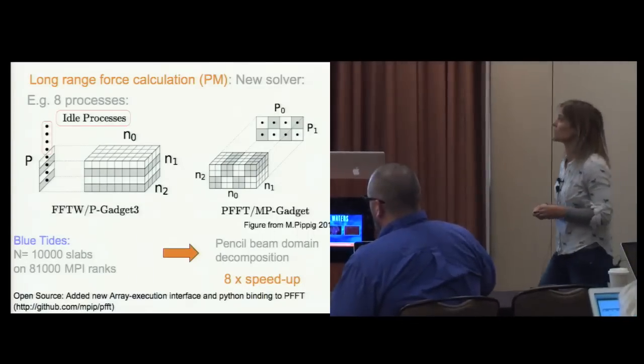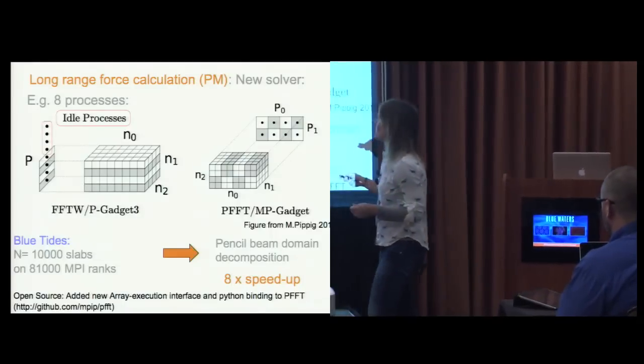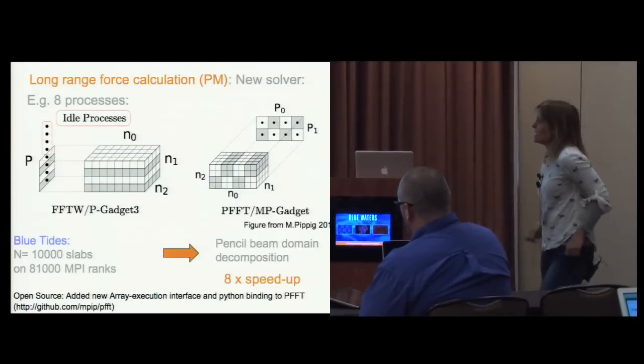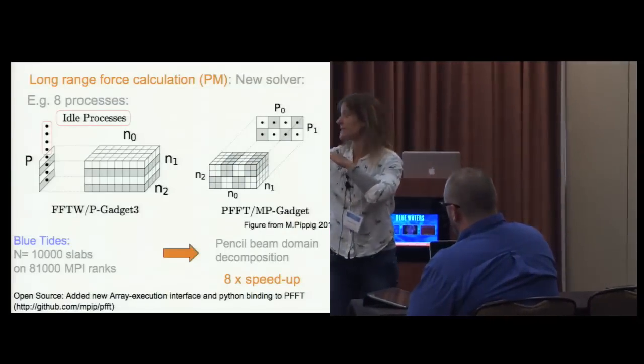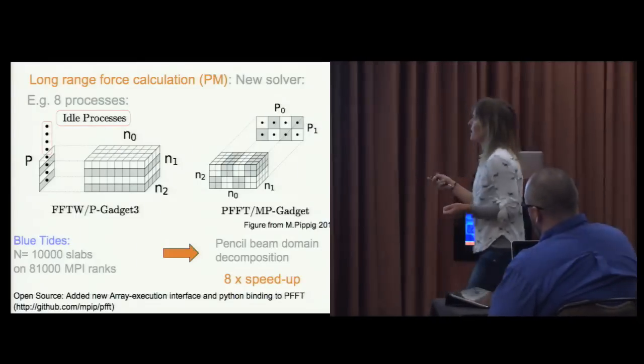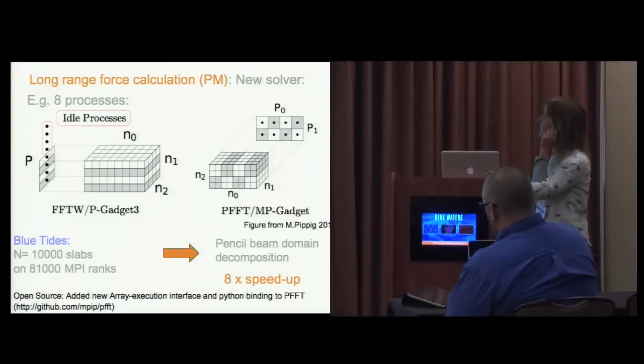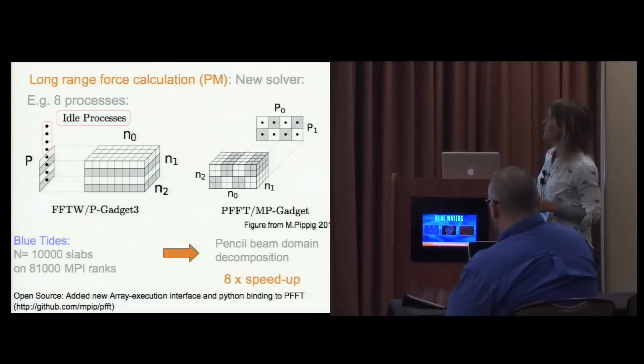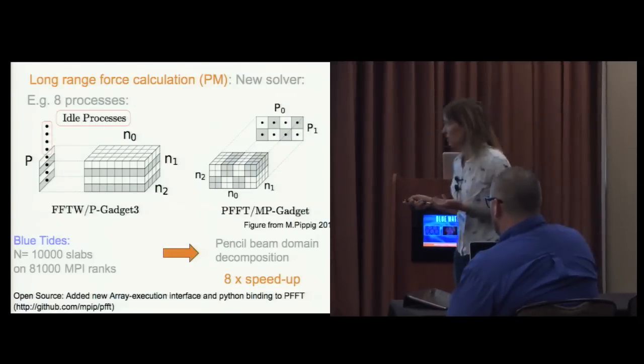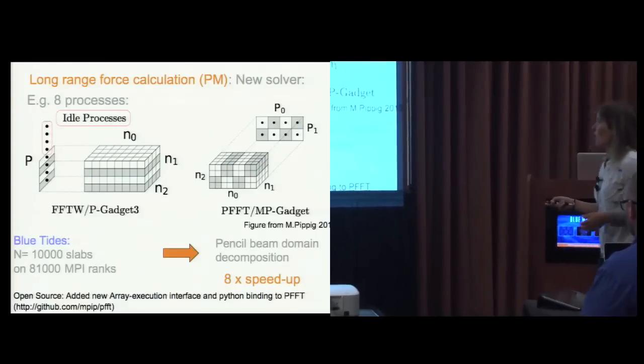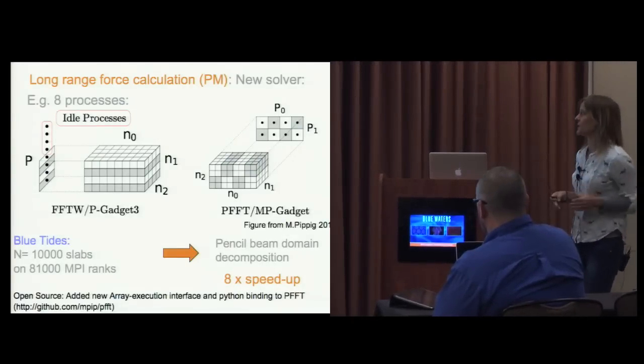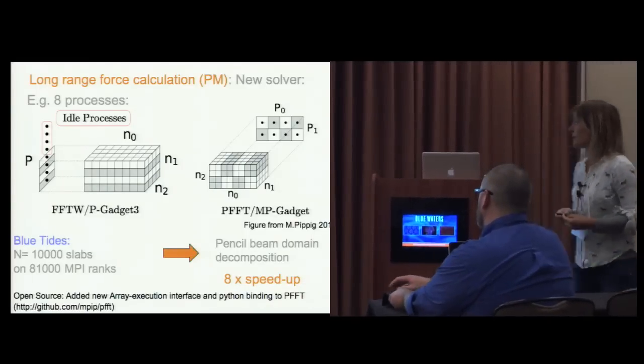In the long range force calculation, we actually had to move completely to a new PM solver, particle mesh solver. Gadget was making use of FFTW to calculate forces in the PM regime. Now we move to a pencil beam domain. FFTW works in slabs, and for N processes when you cut this domain in slabs, you're having idle processes. With a pencil beam you're fine. Going from FFTW in slabs to pencil beam domain decomposition gave us a factor of 8 speed up.